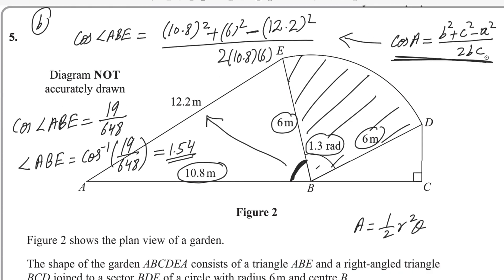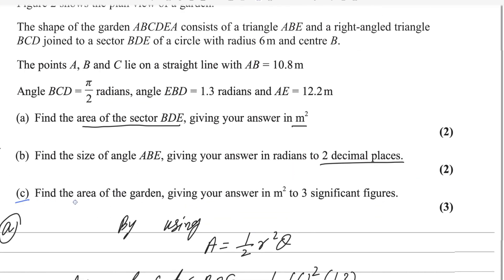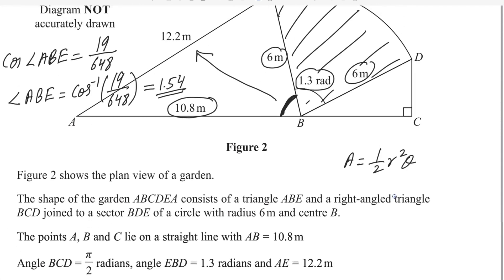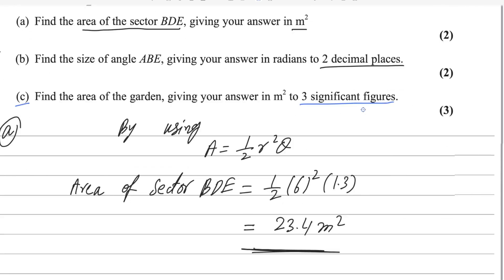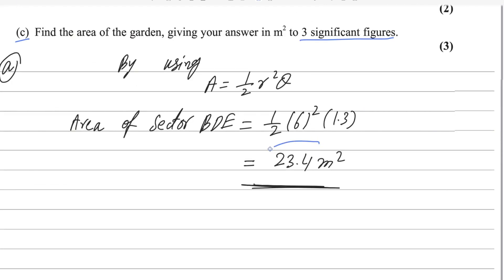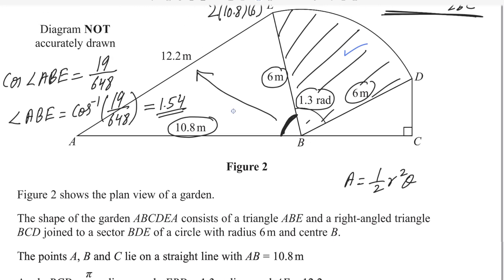Now for the last part: find the area of the garden, giving your answer in square meters to three significant figures. The total figure is the garden. We already found the area of the sector, which equals 23.4. Now we need to find the areas of the two triangles.